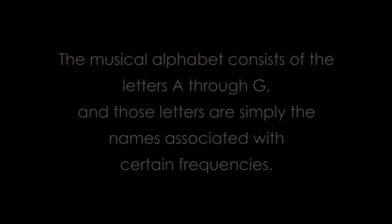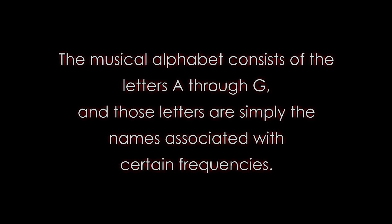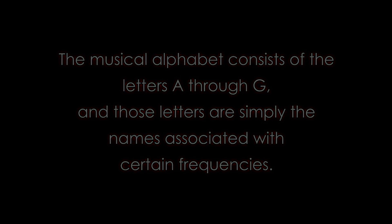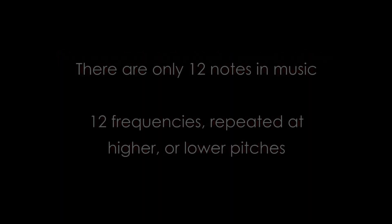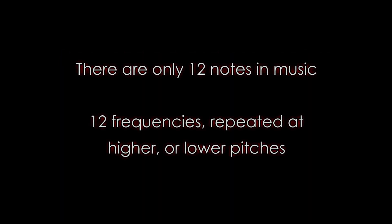Grab a piece of paper and a pen and take notes during this video. The musical alphabet consists of the letters A through G, and those letters are simply the names associated with certain frequencies. There are only 12 notes in music — 12 frequencies — repeated at higher or lower pitches.